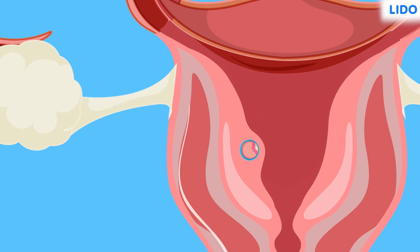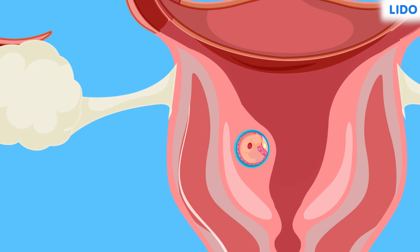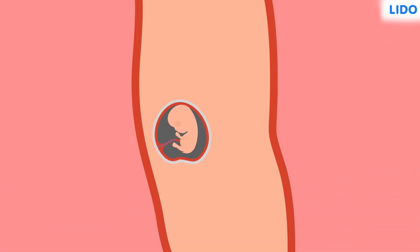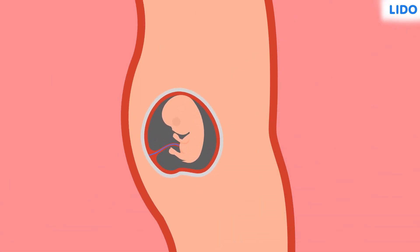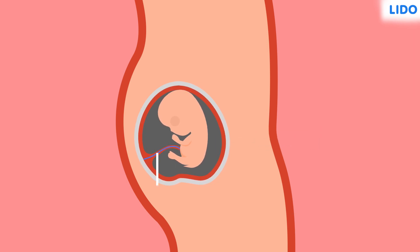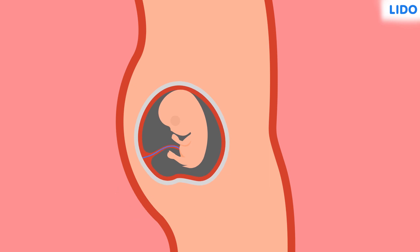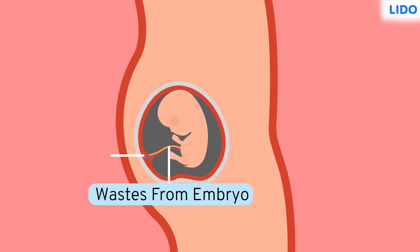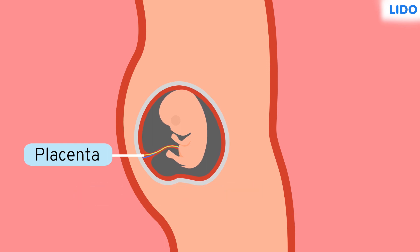Fertilization and implantation lead to conception in a female who is then considered being pregnant. A special tissue is formed as a bridge between the uterine wall and the growing embryo, which gets its nutrients from the mother's body. It disposes of its wastes through this connection known as the placenta.